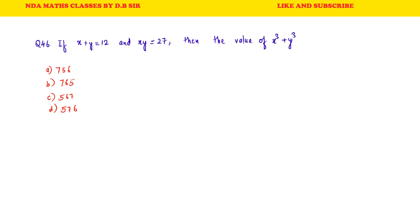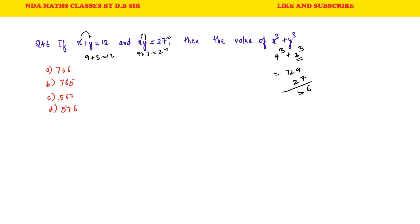Question 46: If x + y = 12 and xy = 27, find the value of x³ + y³. Since 9 × 3 = 27 and 9 + 3 = 12, the numbers are x = 9 and y = 3. So x³ + y³ = 9³ + 3³ = 729 + 27 = 756. E is the correct answer to this question.